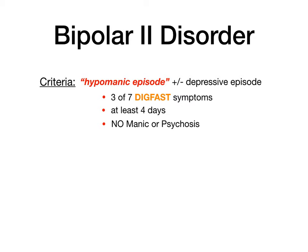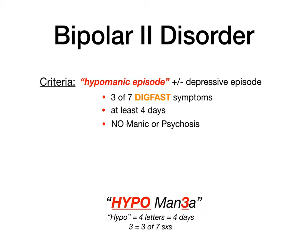To remember the hypomanic criteria, use the mnemonic hypomanthria. Hypo has four letters, reminding you this lasts at least four days. And instead of mania, say mainthria-three, because you need three of seven DIG-FAST symptoms. So hypo — four letters, four days; mainthria-three — three of seven DIG-FAST symptoms. That is bipolar 2 disorder.